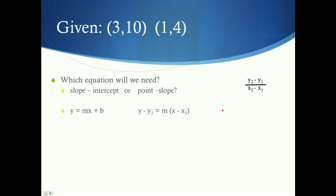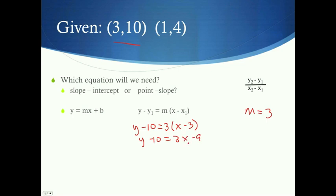It doesn't matter which point you use — either gives the same equation. Using the other point (3, 10): y minus 10 equals 3 times x minus 3, which simplifies to y minus 10 equals 3x minus 9, and adding 10 gives y equals 3x plus 1. Same result. Choose whichever point is easier — avoiding fractions or negatives is a good strategy.